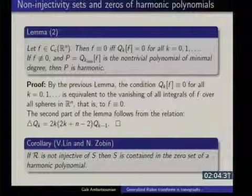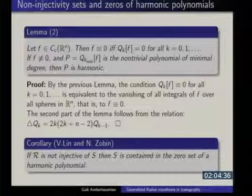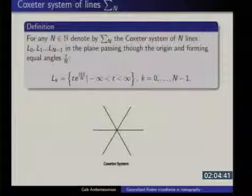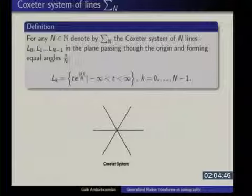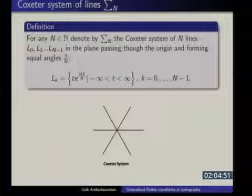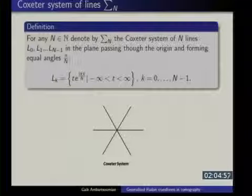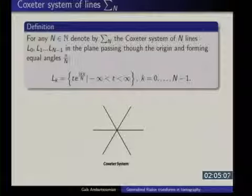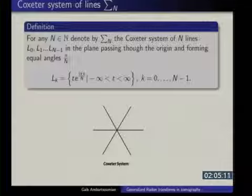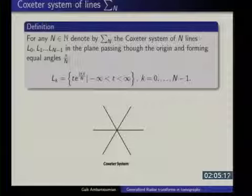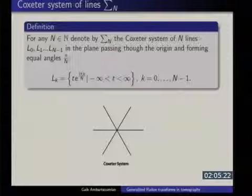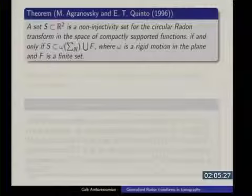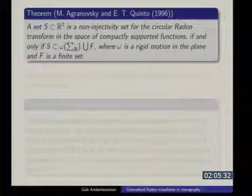So in everything that follows, if you have a set that is not a zero set of a harmonic polynomial, that is immediately a good set. If you have something larger than a zero set of a harmonic polynomial, you are in good shape. In 2D the zero sets of harmonic polynomials are well studied; in higher dimensions it is a nightmare, which is one reason the Agranovsky-Quinto result is not easily generalizable to higher dimensions.